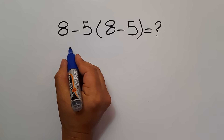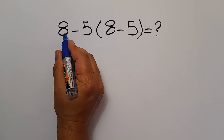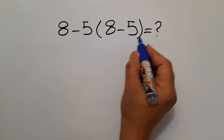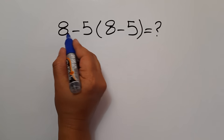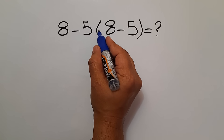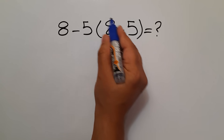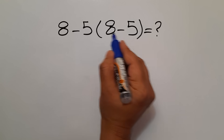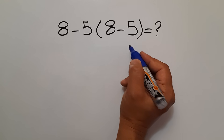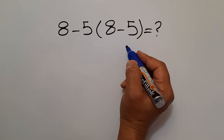Hey guys and welcome to this video. In this video, we want to find the value of this expression, which is 8 minus 5, then times these parentheses. And inside these parentheses, we have 8 minus 5 again. Are you ready to solve?